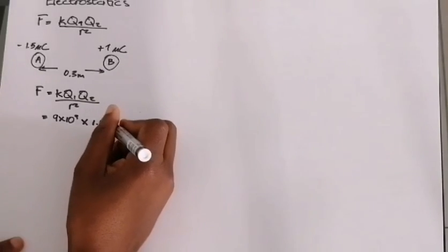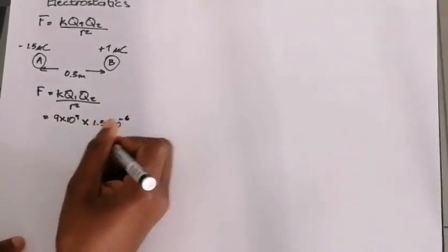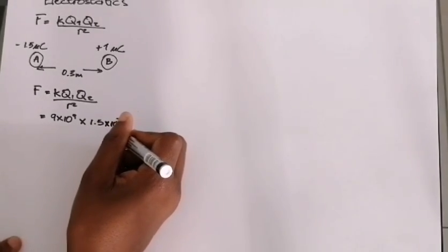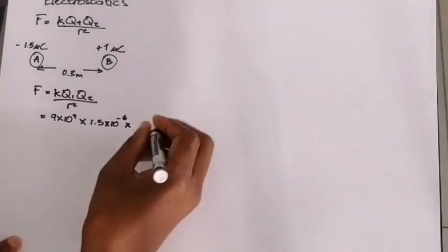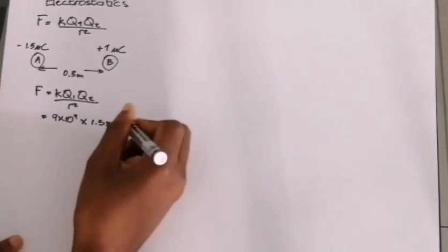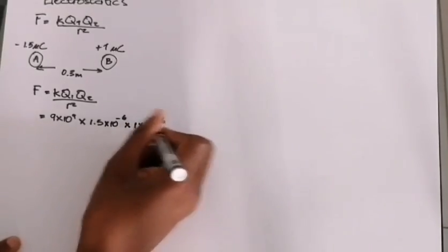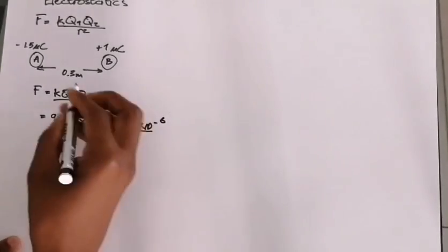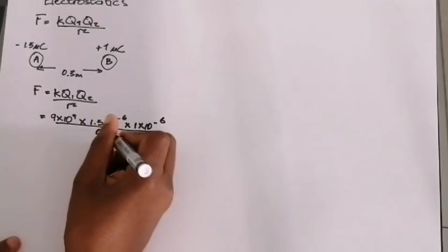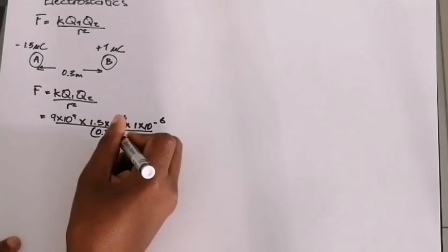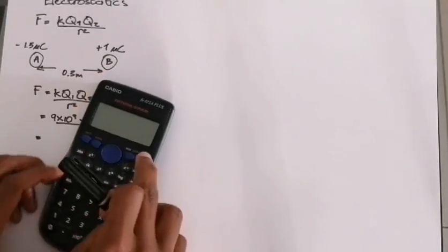Micro simply means times 10⁻⁶. If you don't know this, refer to a table. So the first charge is 1 × 10⁻⁶, and the distance must always be in meters, so we divide by 0.3 squared.